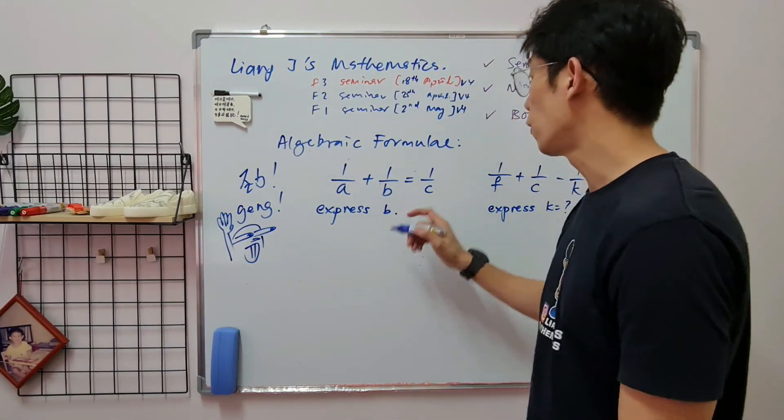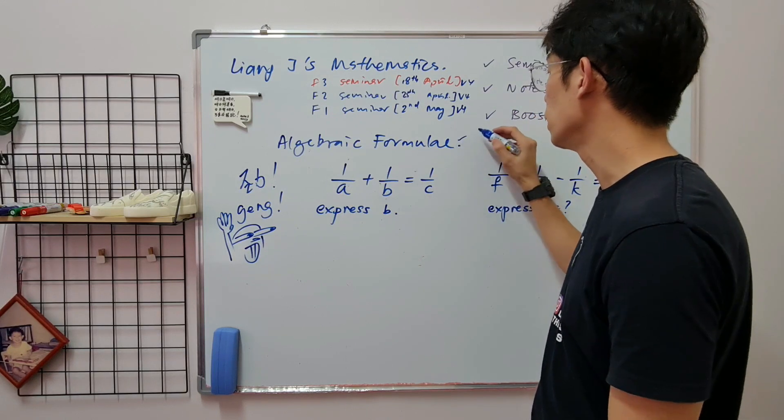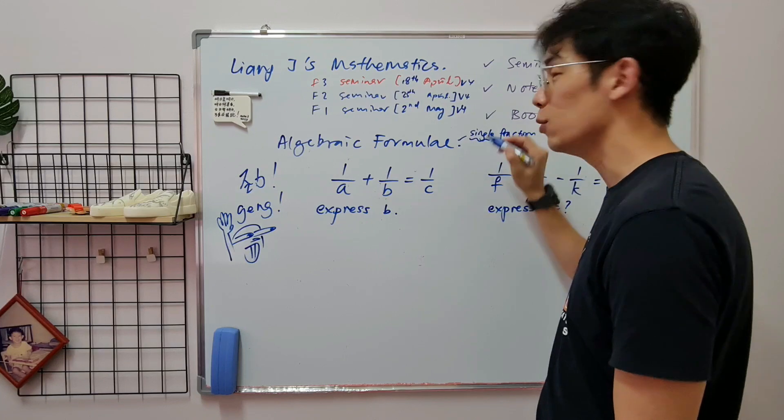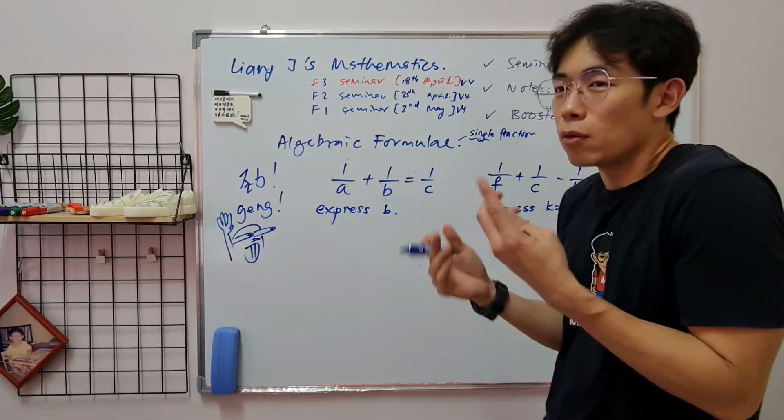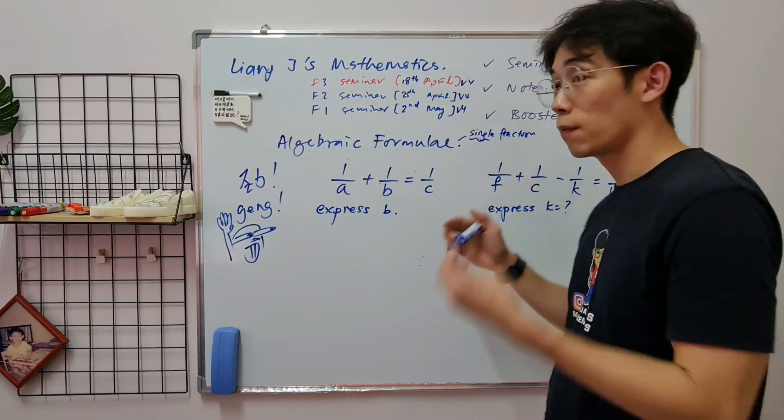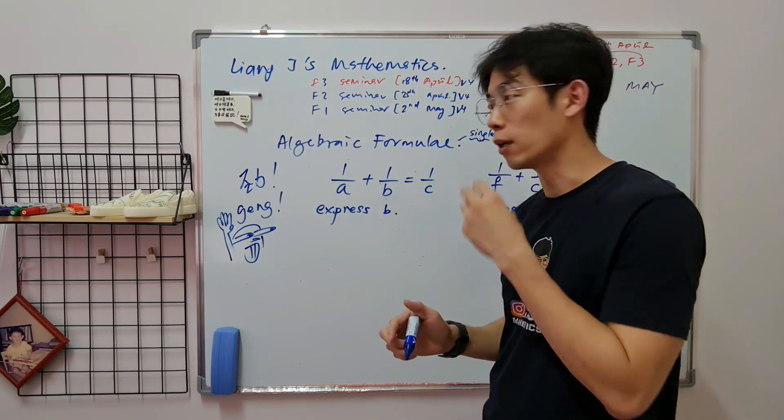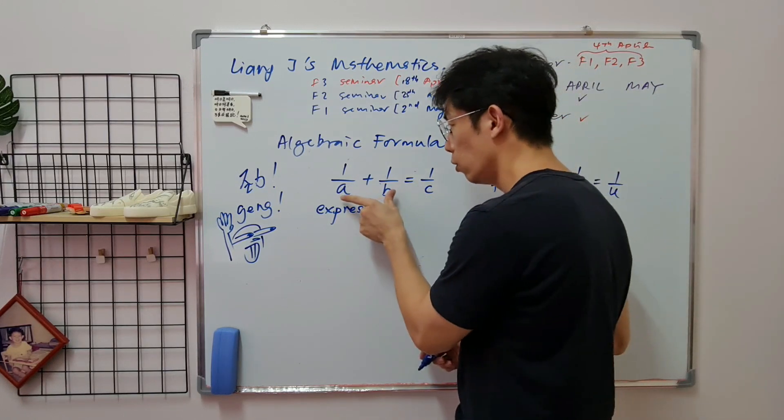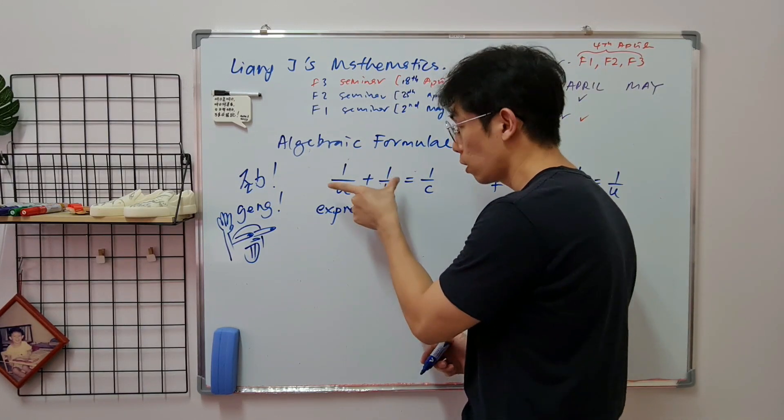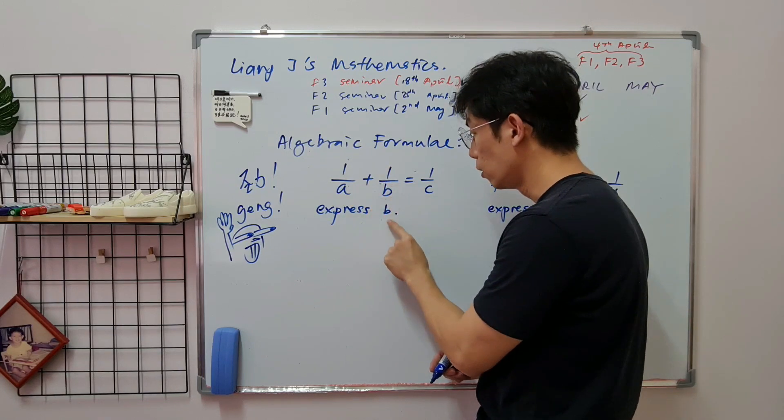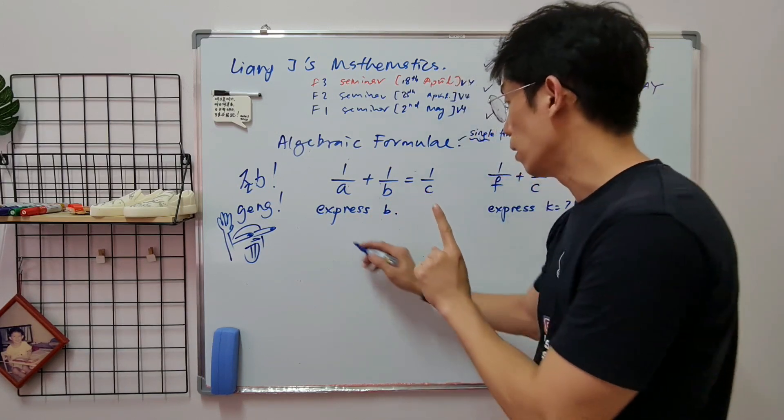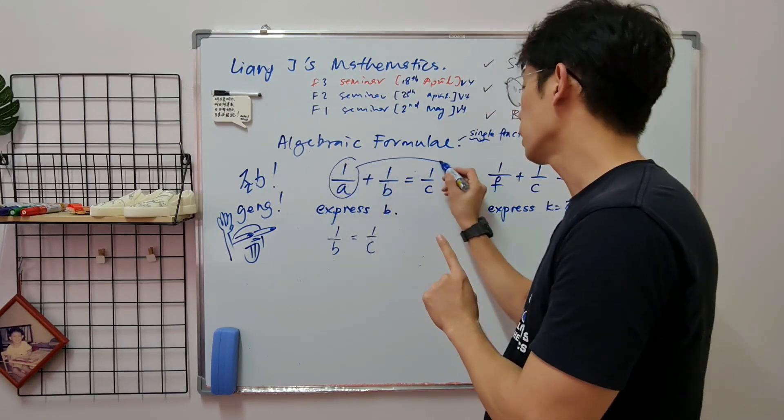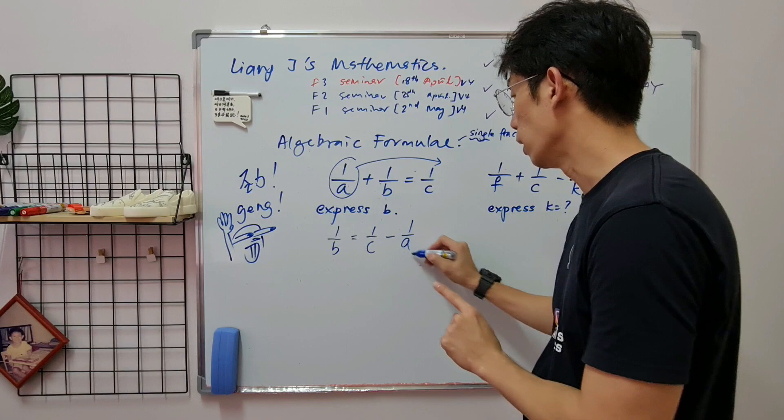When you do algebraic formula, the first thing is you have to know what is single fraction. Single, like you're single. Single means one fraction only. So this is a single fraction, 1 over C. But is this single? No, you're going to be a partner.